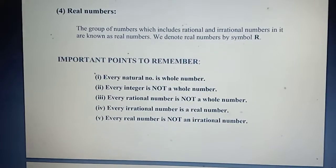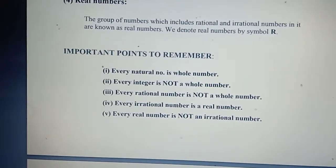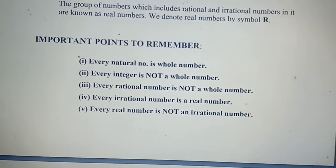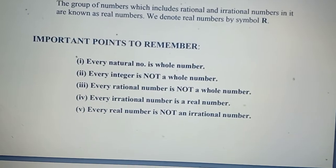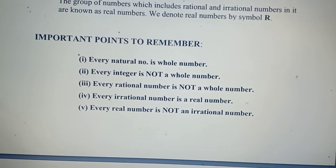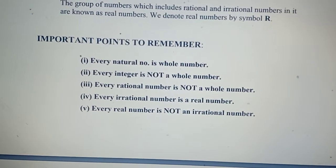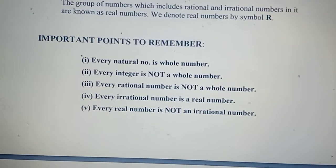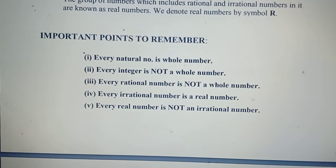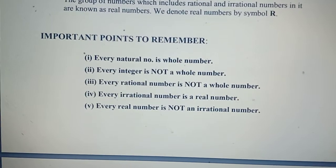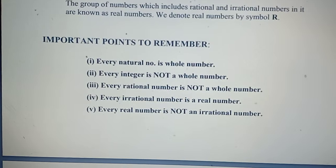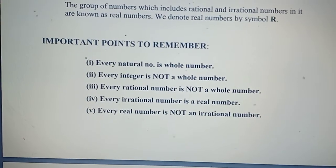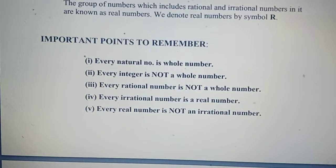Here are some important points to remember. First, every natural number is a whole number. Second, every integer is not a whole number — because all negative numbers are integers, but all negative numbers are not whole numbers.